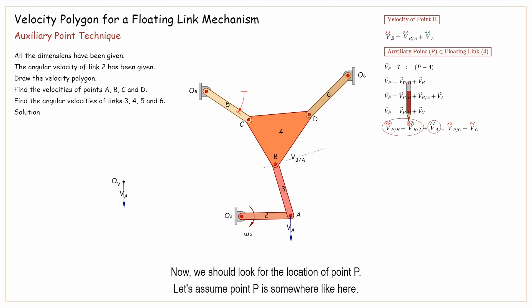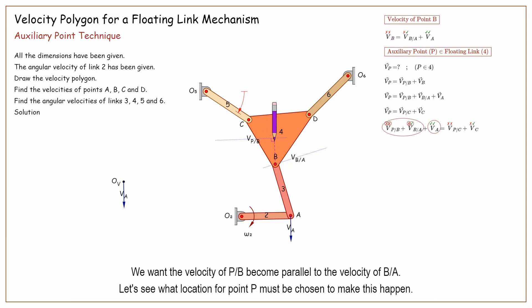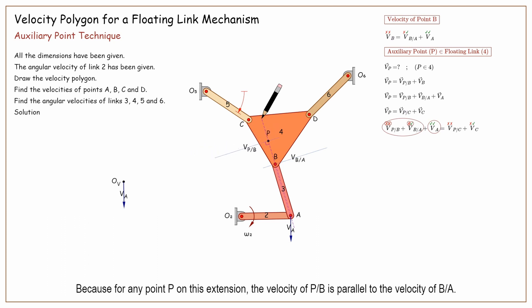Now we should look for the location of point P. Let's assume point P is somewhere like here. We connect it to point B. The velocity of P with respect to B is perpendicular to PB. We want the velocity of P with respect to B to become parallel to the velocity of B with respect to A. Let's see what location for point P must be chosen to make this happen.